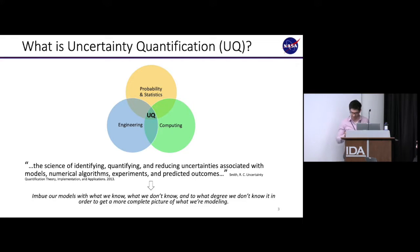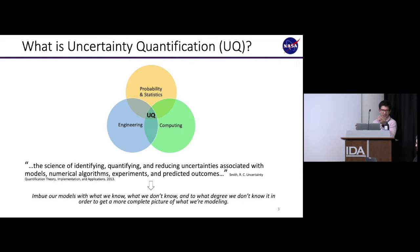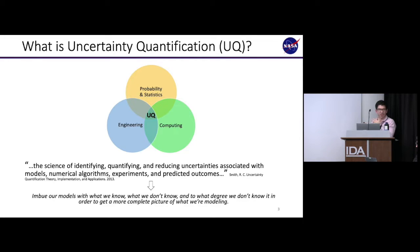I look at UQ as the intersection of different concepts: probability and statistics, the applied math side, engineering or subject matter expertise — it's good to know the inner workings of the model you're working with and understand its behavior as you change parameter values — and computing, which is a big part of UQ. UQ always implies a heavy computational side. We're always talking about models and simulations, typically complex ones that take a long time to run, so we have to use more advanced techniques to make a UQ analysis tractable.